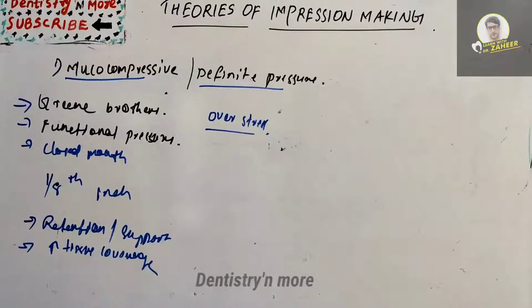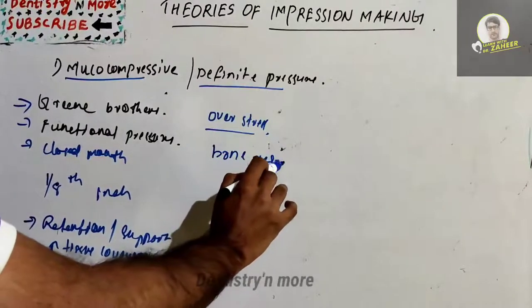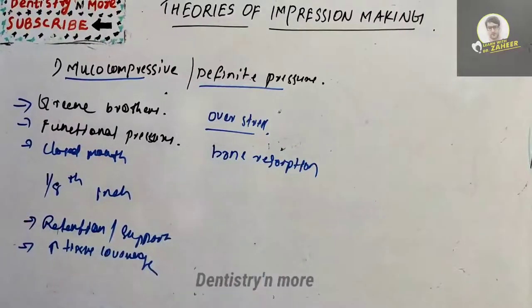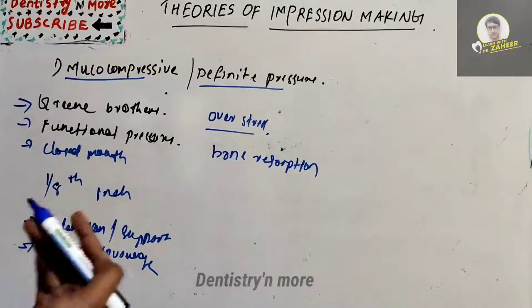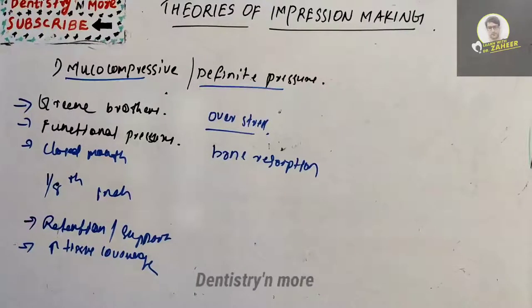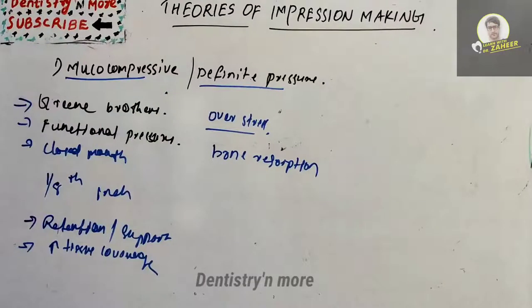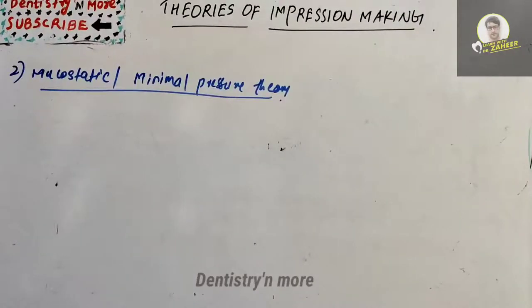Over-stressing the tissue often results in good initial retention, but eventually there will be bone resorption. After bone resorption, the denture loses retention — specifically, there is loss of retention during rest due to tissue rebound. That is the mucocompressive or definitive pressure technique: good retention and support with more tissue coverage, but more stress to the tissues leading to resorption and retention loss.